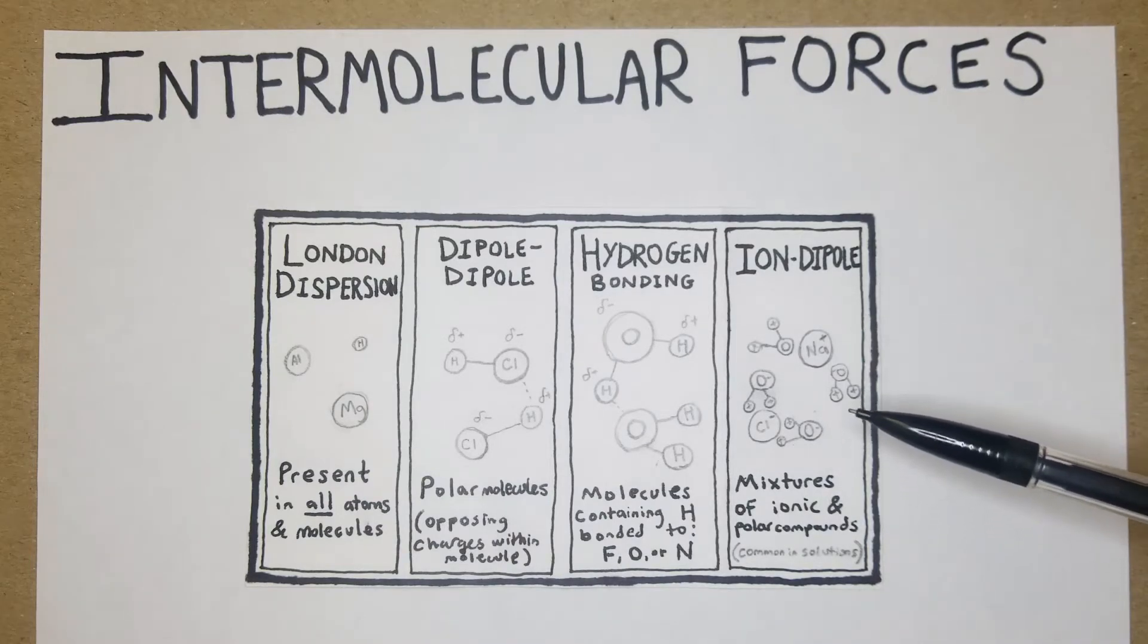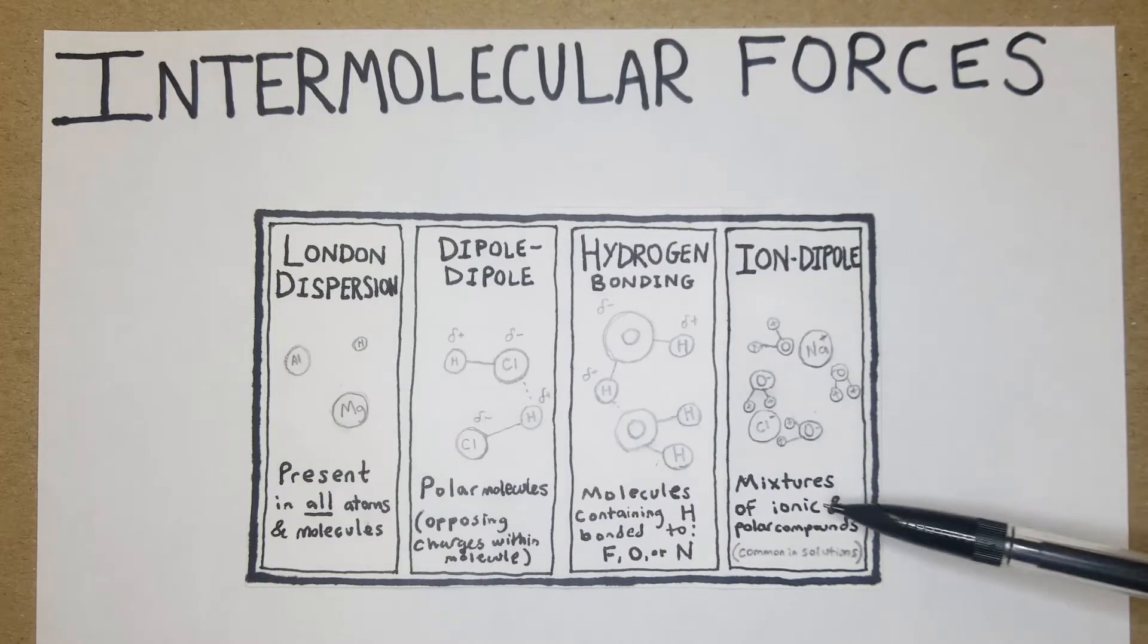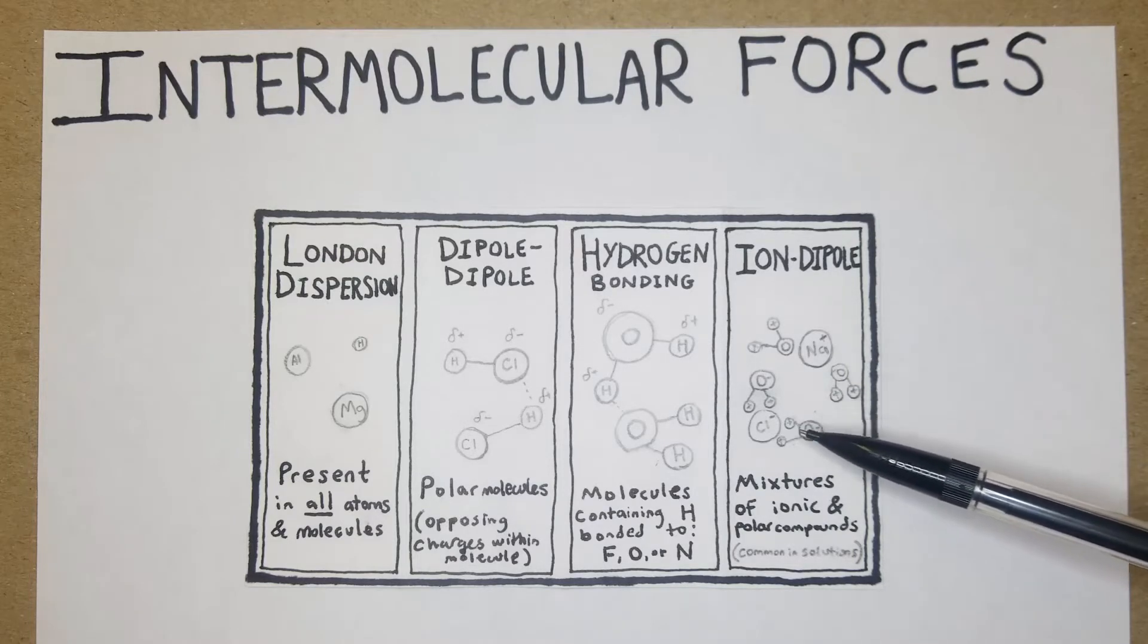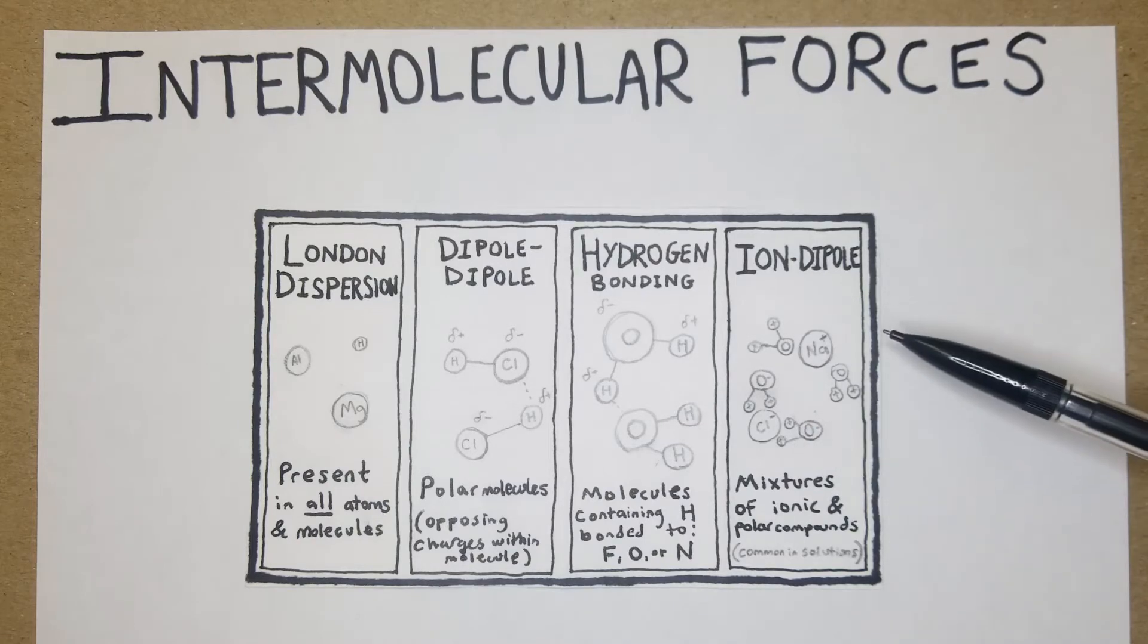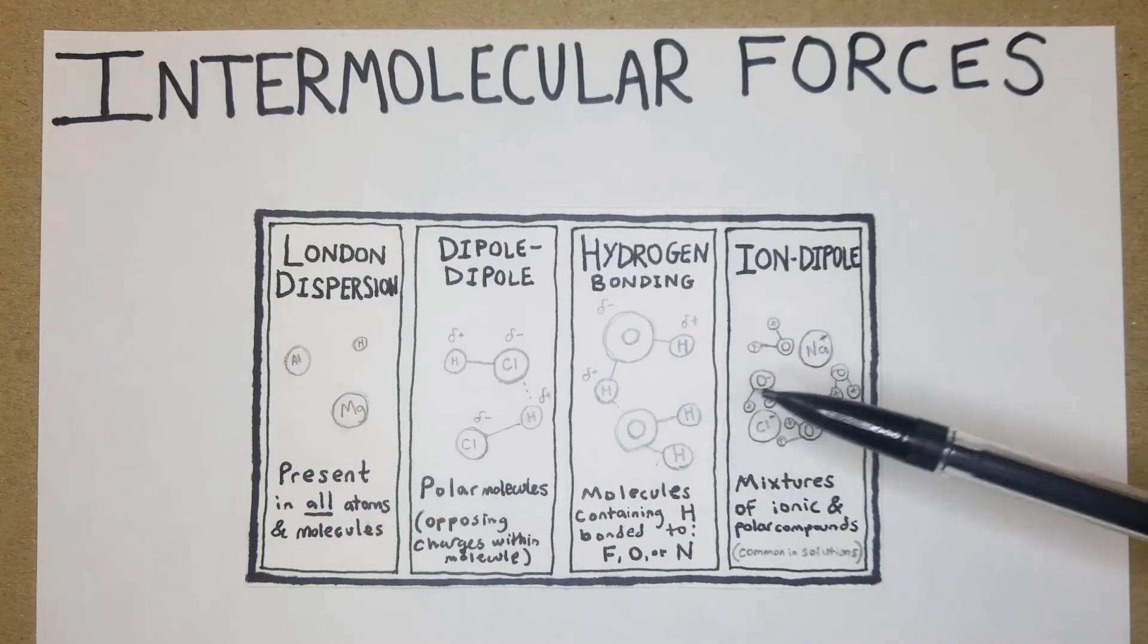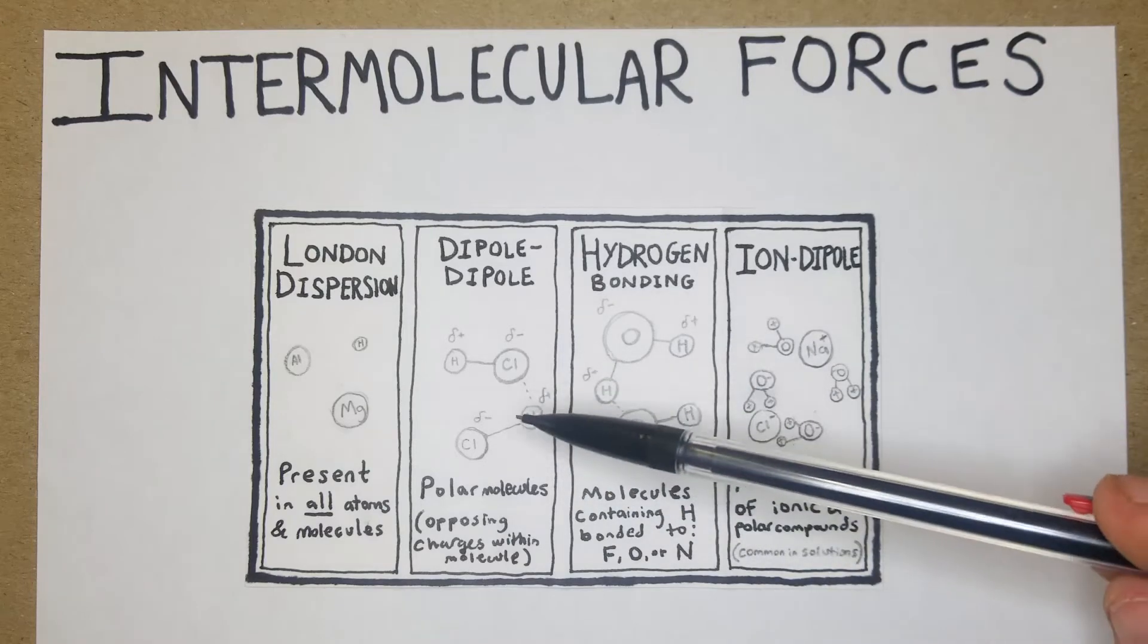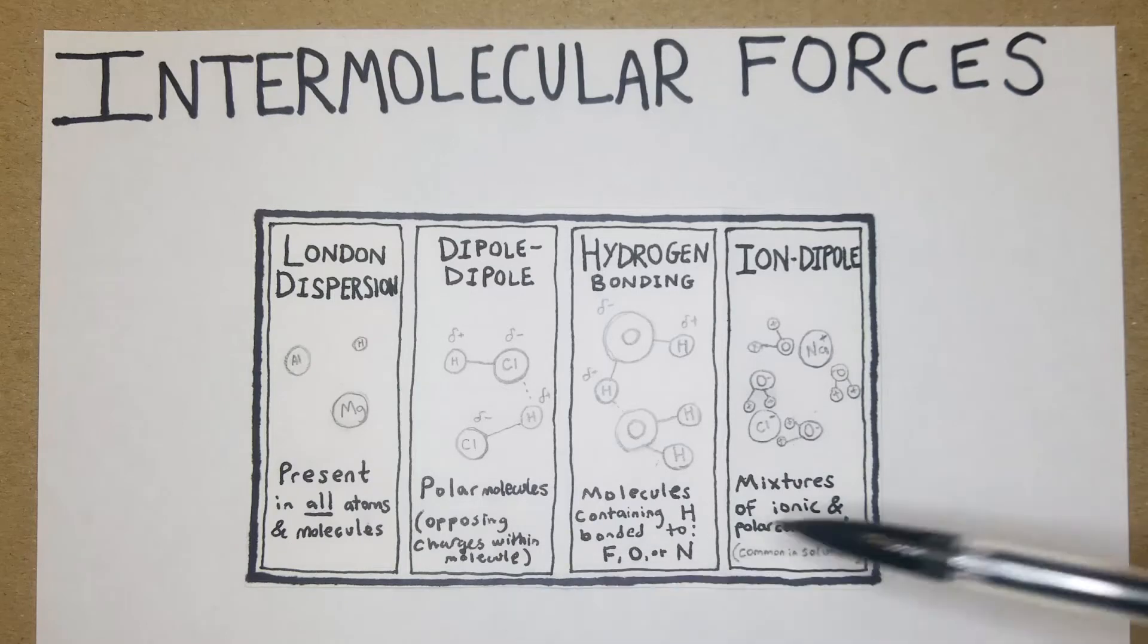Ion-dipole basically has to do with mixtures of ionic and polar compounds, and these are common in solutions. It's kind of difficult to explain, but basically it has to do with differences in charges between things, and they have stronger associations because they're pulled by the charges as opposed to just being hydrogen or dipole-dipole where there's multiple within the same molecule.